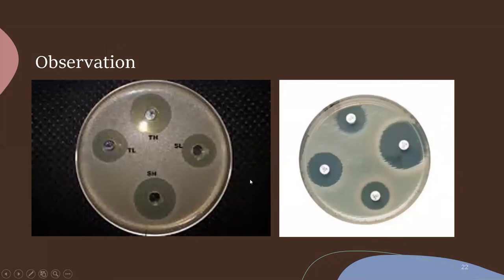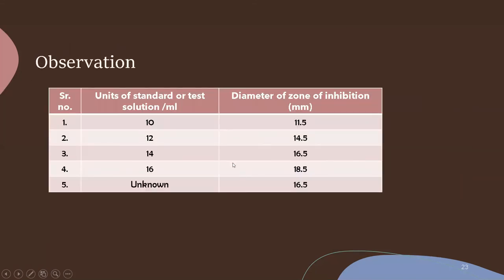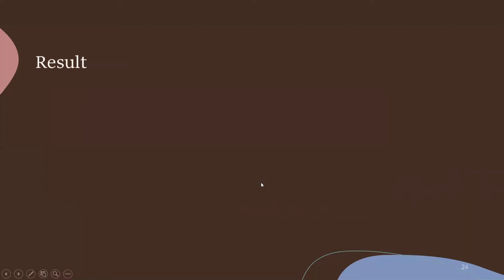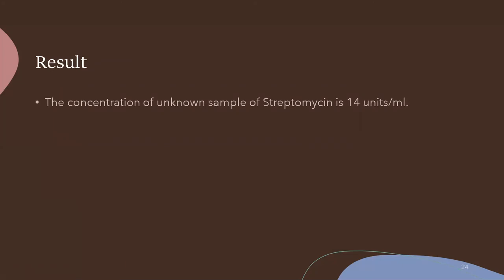Observation: for the cup plate method you will get zones of inhibition around the cavities, and for the filter disc method you will see zones of inhibition around the discs. Mark with a marker and measure the zone of inhibition using a scale. The results obtained show the zone of inhibition for the unknown was 16.5 mm. From the calibration curve, the concentration of the unknown test antibiotic is 14 units per ml. The microbiological assay of streptomycin was successfully performed using the cup plate and filter disc methods.